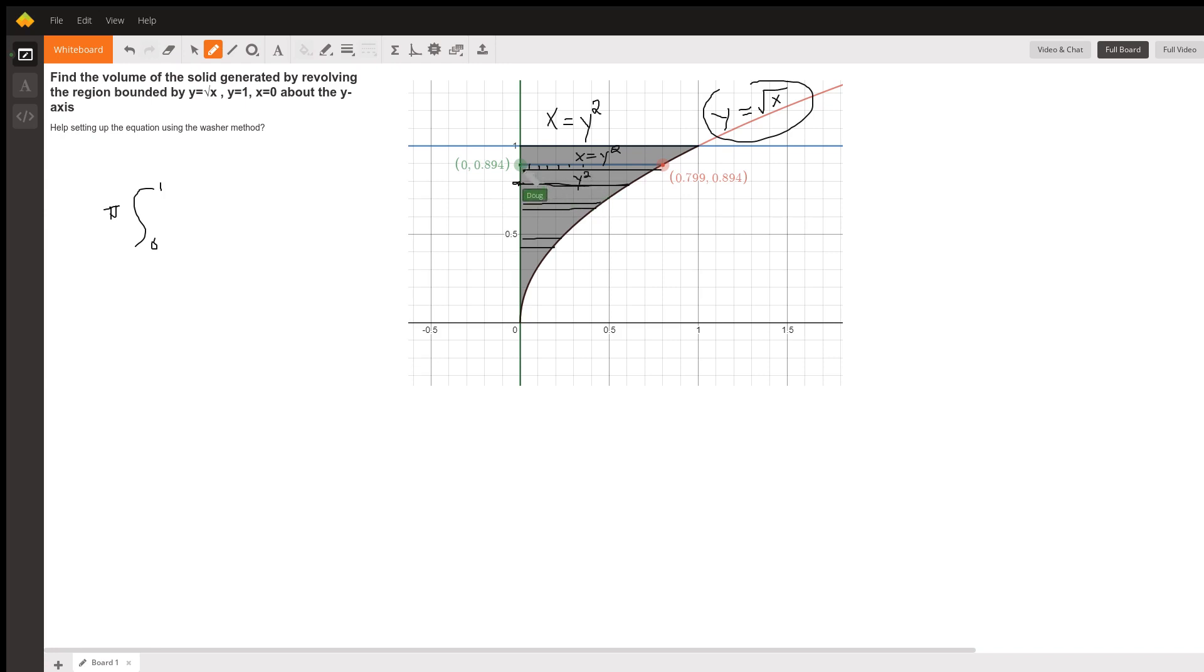The thickness of the washer is represented by dy. So, here's the radius. Here's the radius squared. And there's the thickness of the washer.